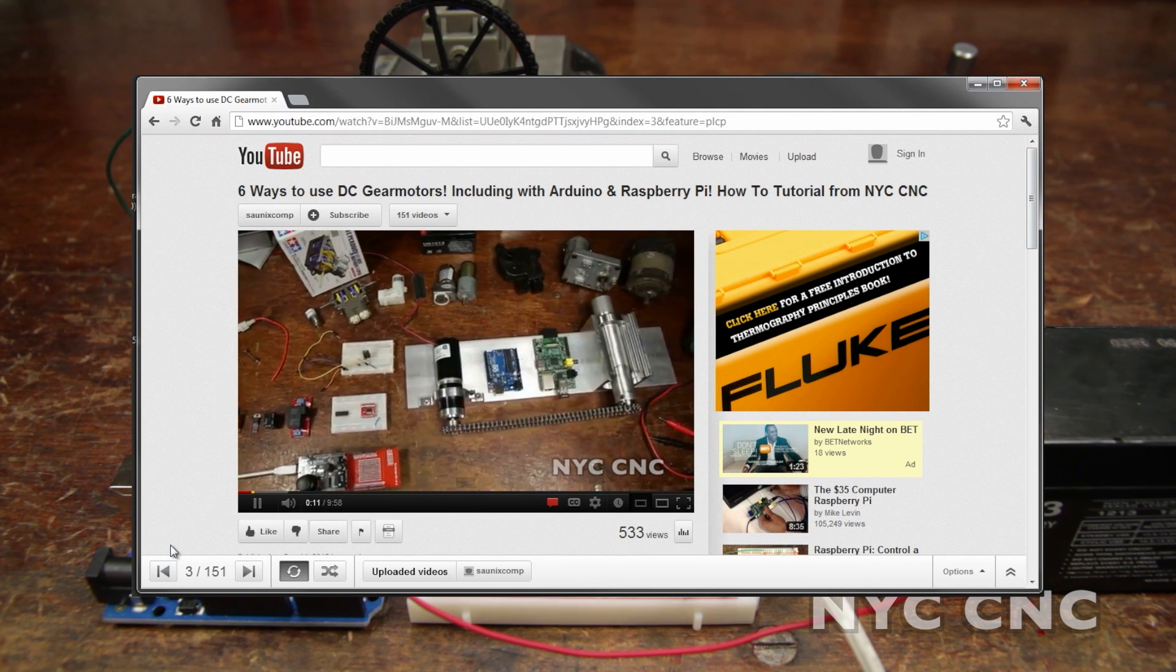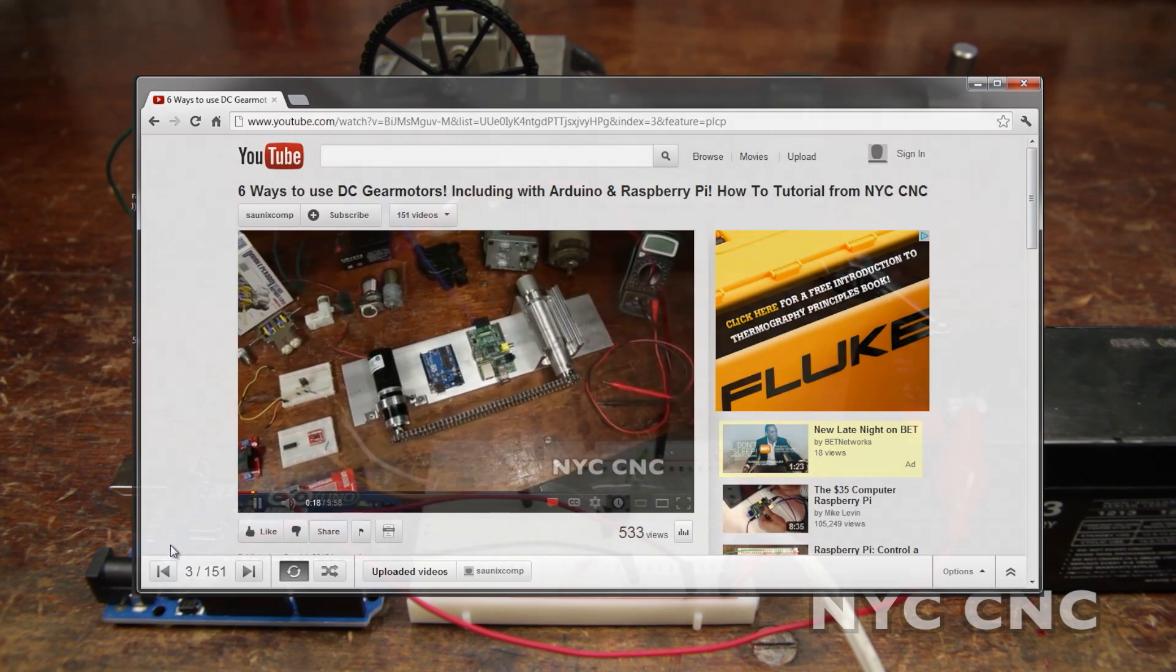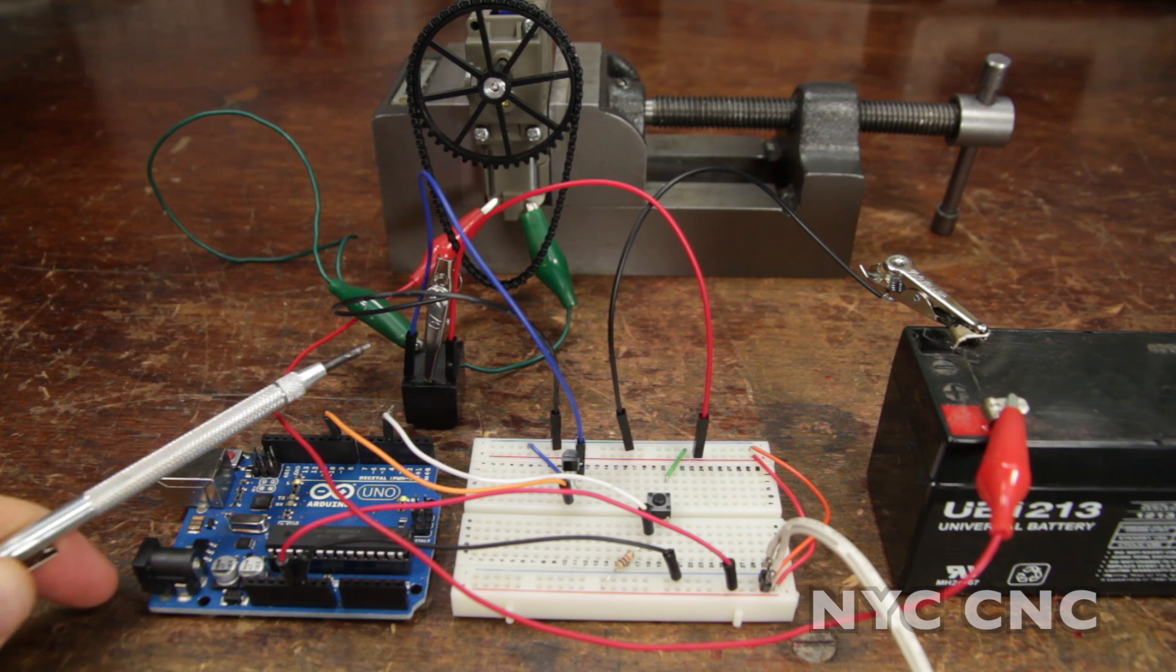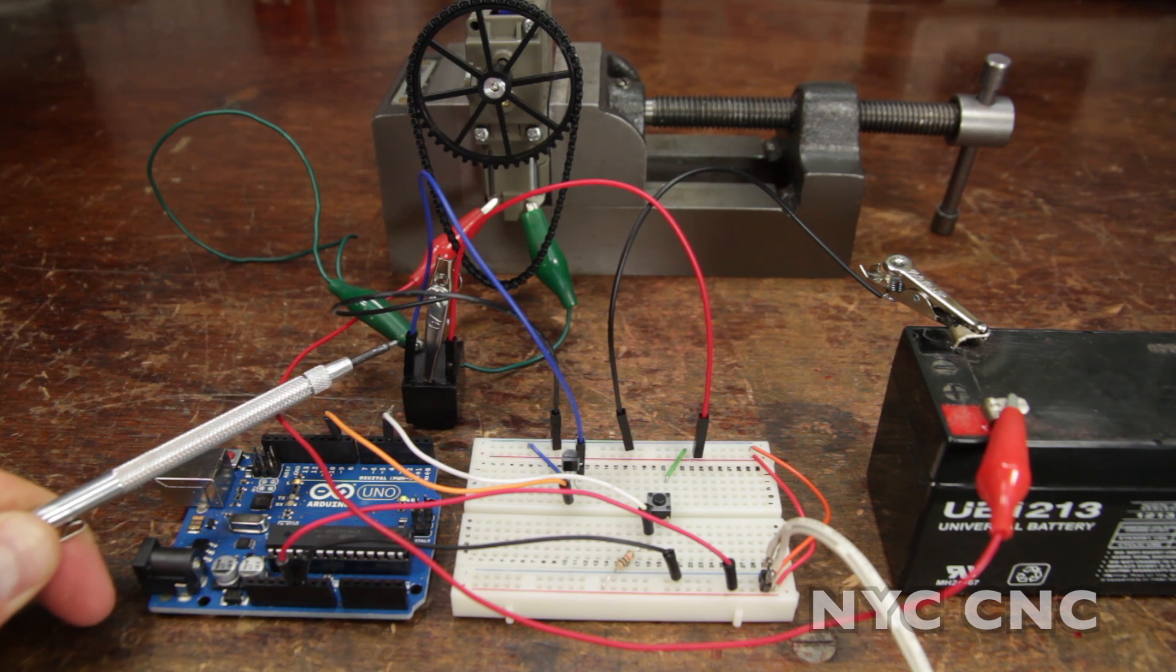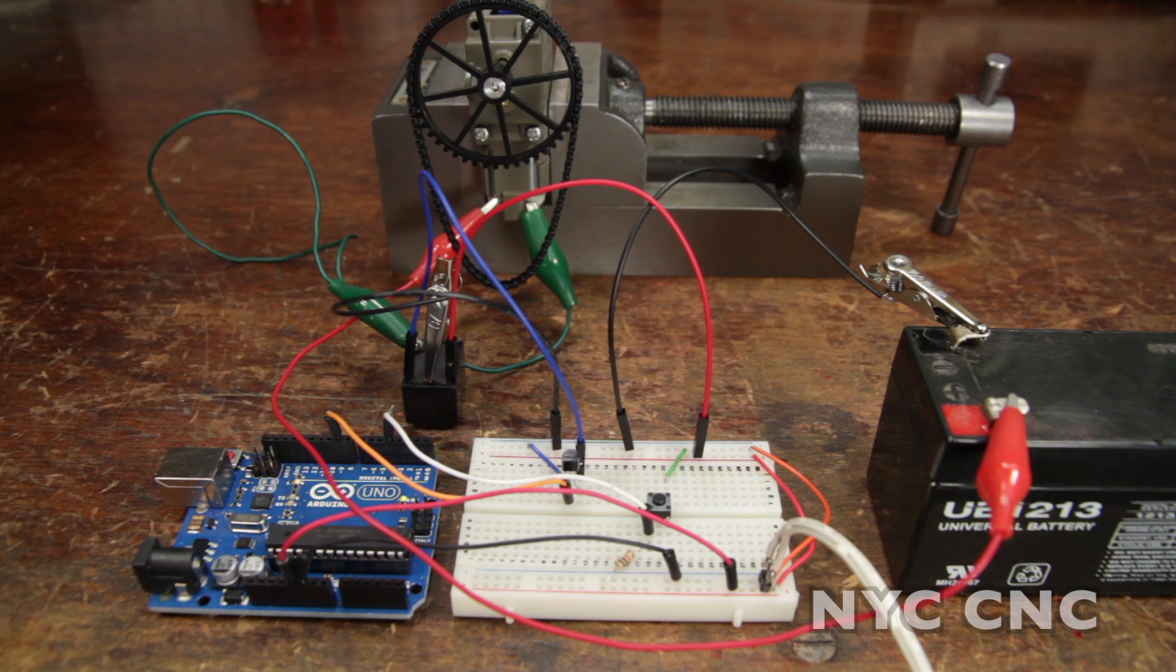You can view that video here and see additional details on how a relay works and other ways to work with DC gear motors. In that video I showed how connecting a 5 volt signal across the two relay pins shown here connected by the blue and the red jumper wires would close the relay and turn on your motor.